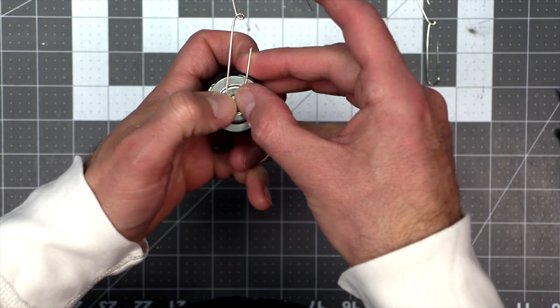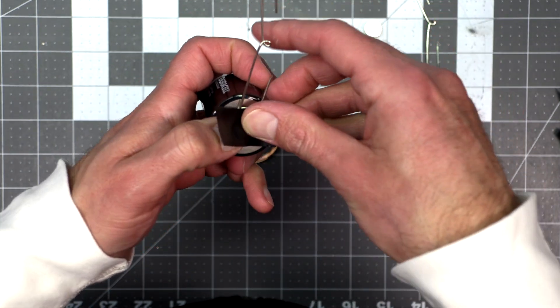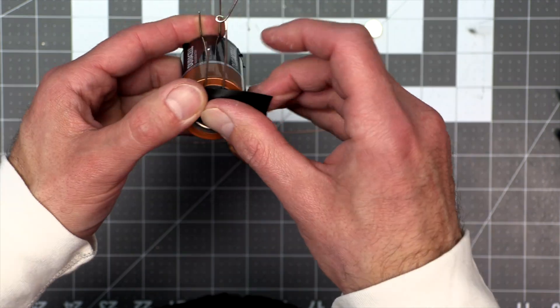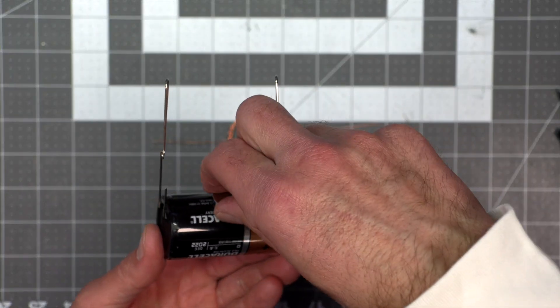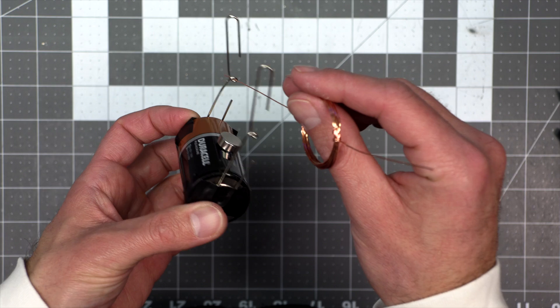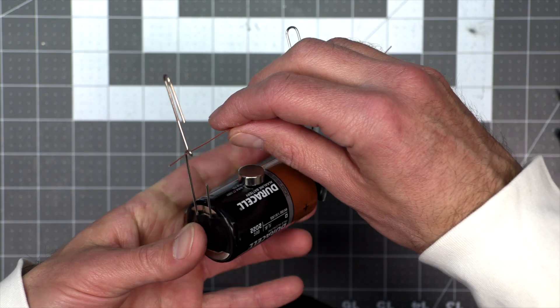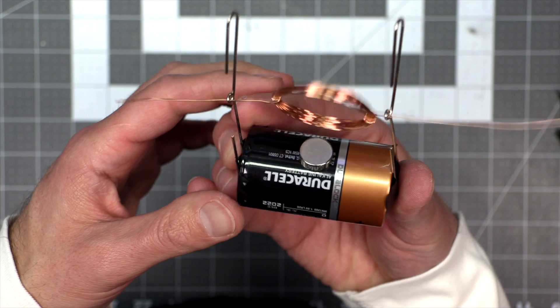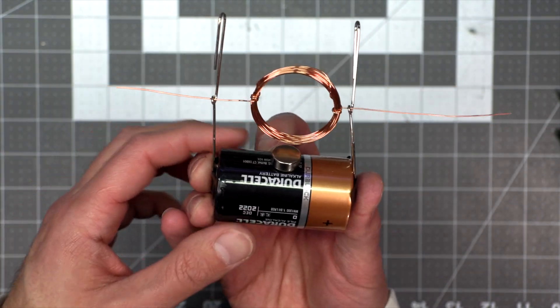It's time to assemble your DC motor. Attach a paper clip with some tape to the negative terminal of the battery. Then attach the other paper clip to the positive end of the battery. Then place your magnet right in the middle of the paper clips on your battery. Then thread the ends of your copper winding through the circles you made in the paper clips, and give it a little push, and see your motor in action.